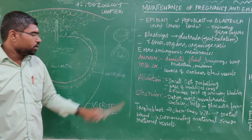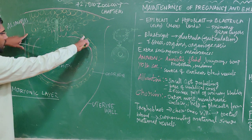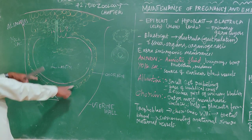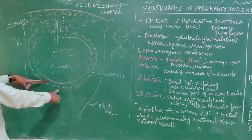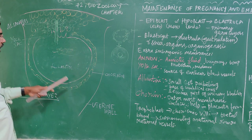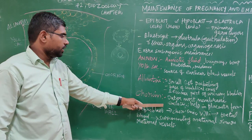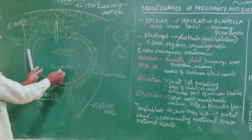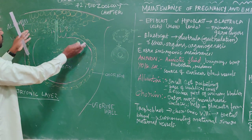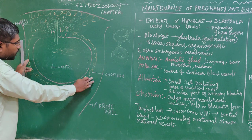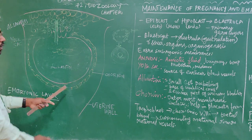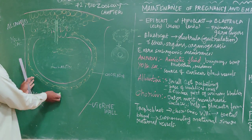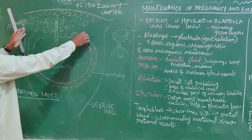The next membrane is the chorion, which is the outermost layer of the fetus. The chorion is the outermost layer and encloses all the other layers — amnion, yolk sac, and allantois — within it.